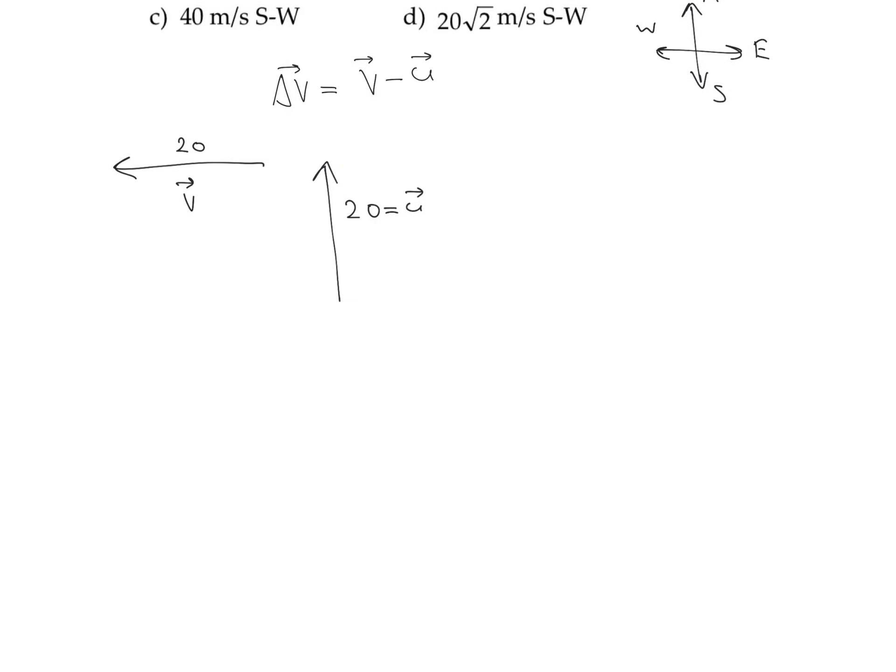The change in velocity—we need to find v vector minus u vector. We need to calculate this 20 vector minus this 20 vector.